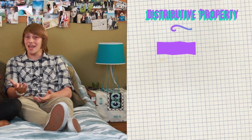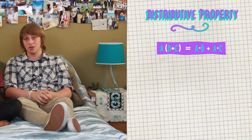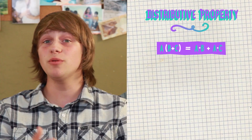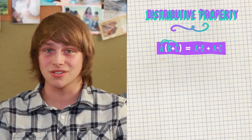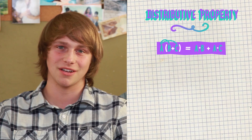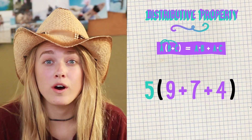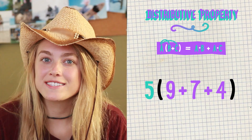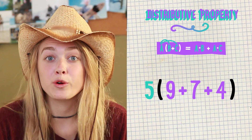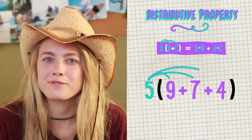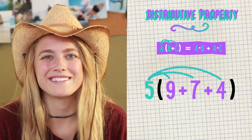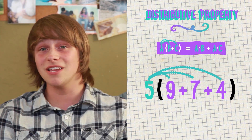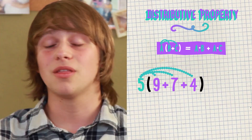The distributive property of multiplication means when you have a number multiplying addition and/or subtraction within parentheses, you can distribute multiplication over the parentheses to all the numbers inside. Say we have the number 5 times the quantity 9 plus 7 plus 4. The numbers inside the parentheses are hanging out like buddies, and we're going to distribute the 5, sort of like we did with the bracelets. To do this, let's multiply each number inside the parentheses by 5.